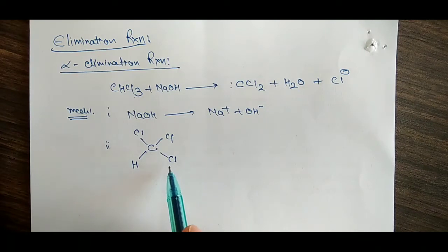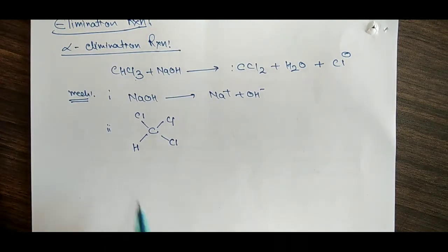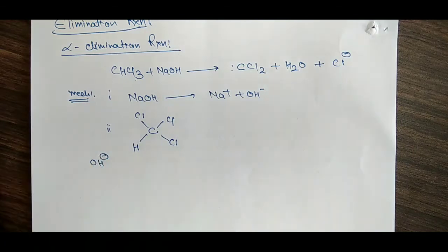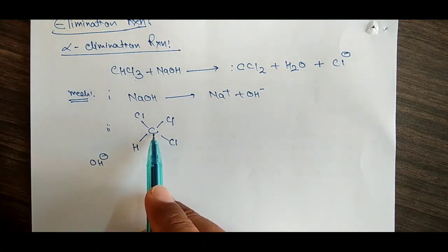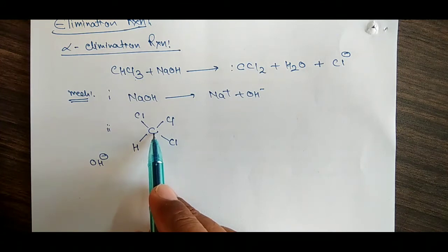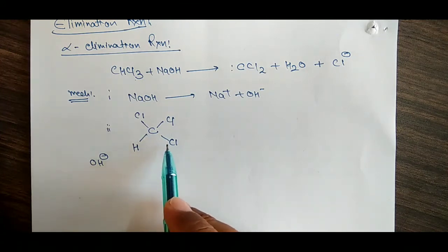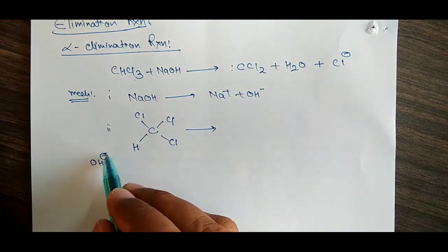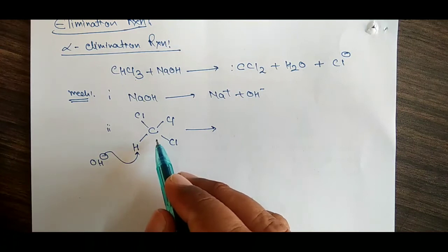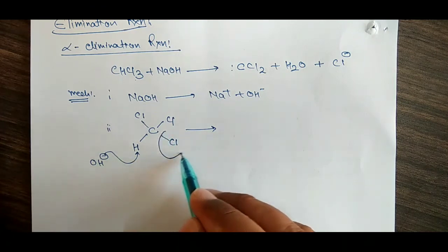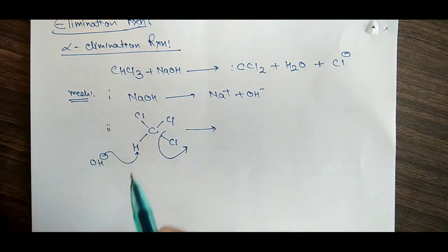If we have a chloroform — this is C, this is Cl, this is Cl, this is Cl, and this is H — the base will abstract this proton from here. And this is Cl, this is Cl, and this is Chlorine.